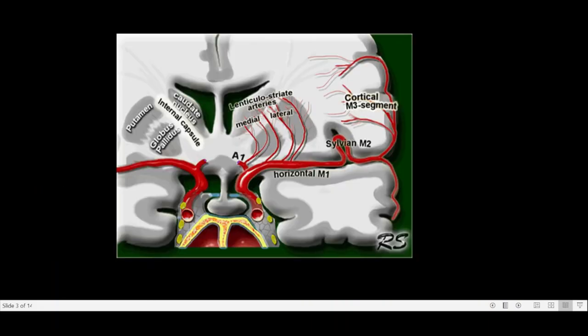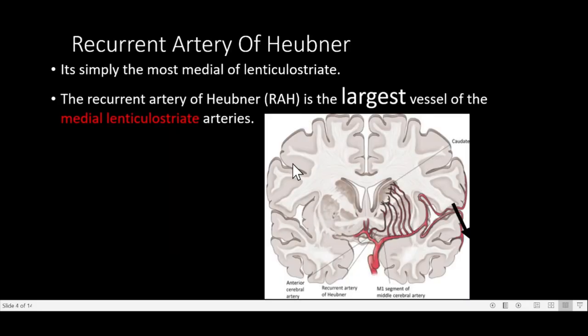As we know, there are two types of lenticulostriate groups: one is a medial group and another is a lateral group. The medial group arises from the ACA and the lateral group arises from the MCA. The recurrent artery of Heubner is simply the most medial of the lenticulostriate arteries and is usually the largest among the medial lenticulostriate group.